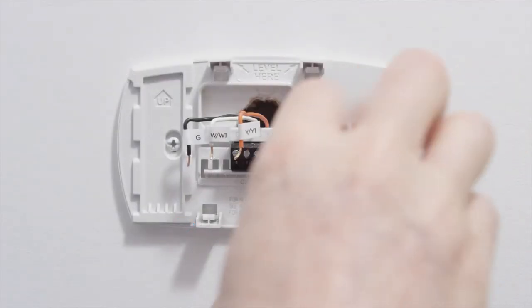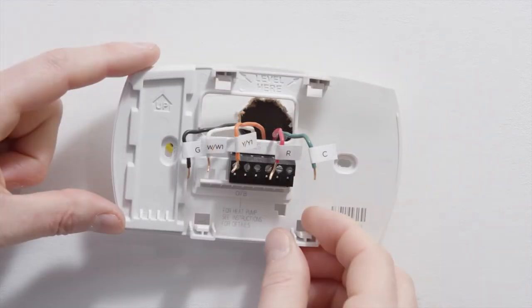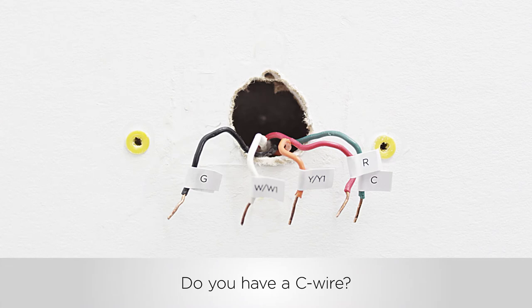Gently remove the thermostat backplate, being careful not to let the wires fall into the recess of your wall. Wi-Fi connected thermostats require power to operate. You can power your Ecobee 4 with 24 volts supplied by a wire labeled C.